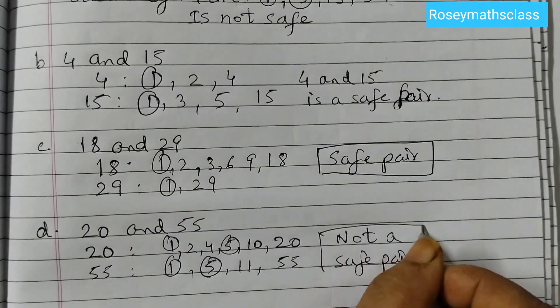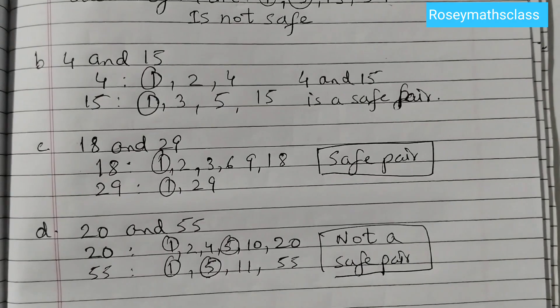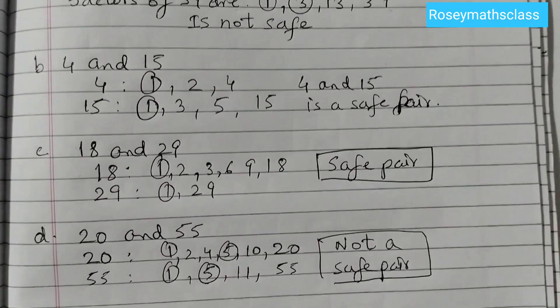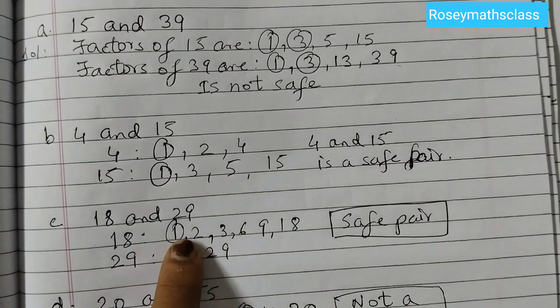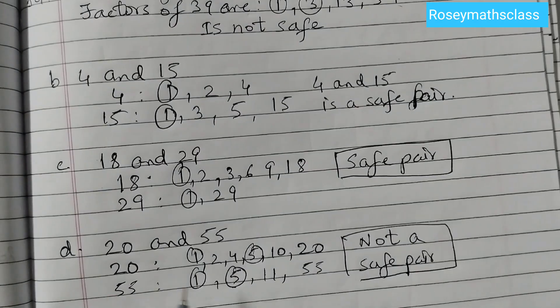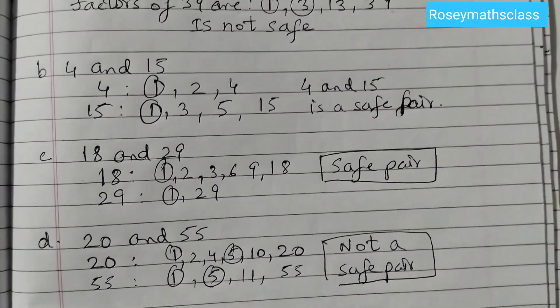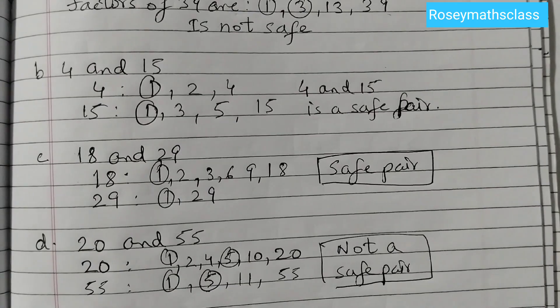Or we can say 20 and 55 are not co-prime numbers. So the co-prime numbers are only 4 and 15, and 18 and 29. 15 and 39 are not co-prime. 20 and 55 are also not co-prime. That's all for now. See you in the next video.